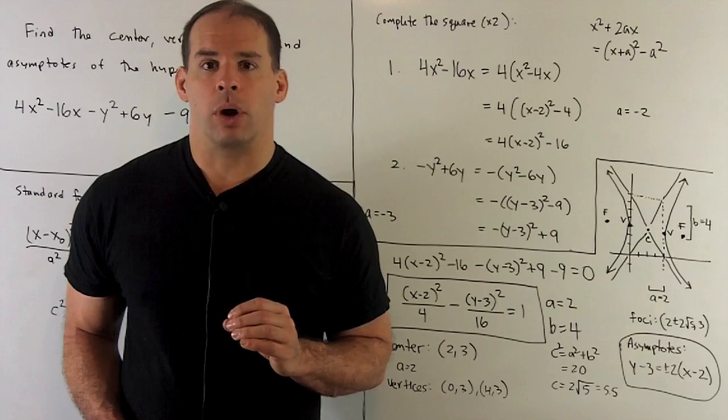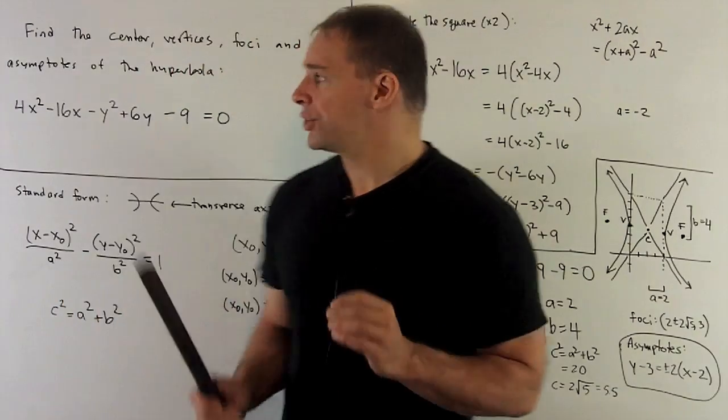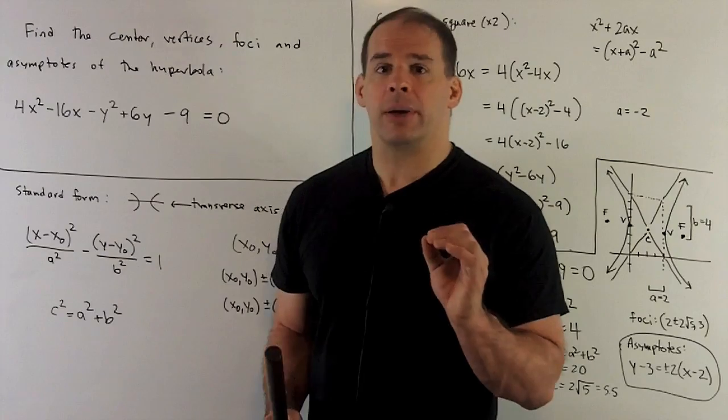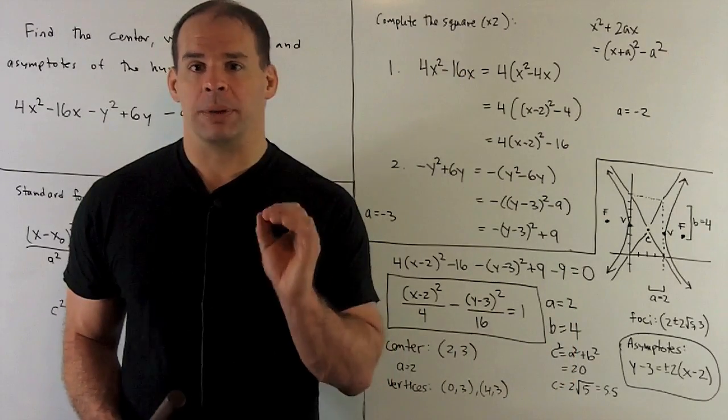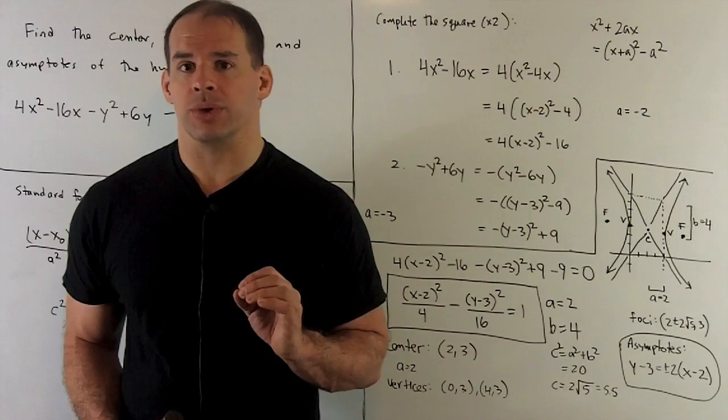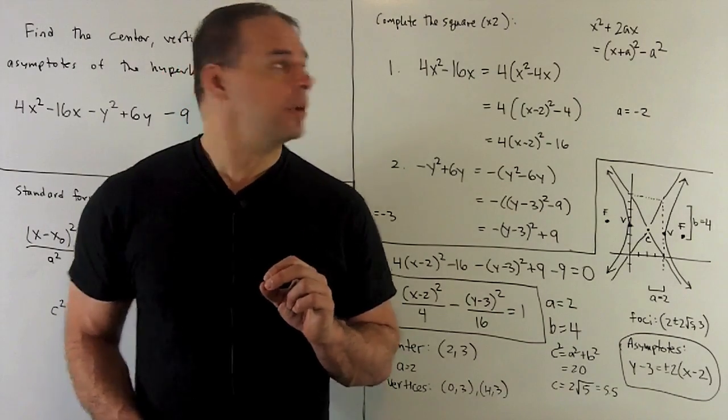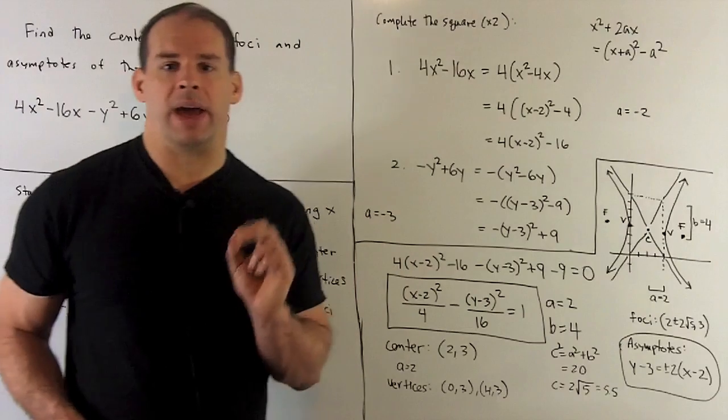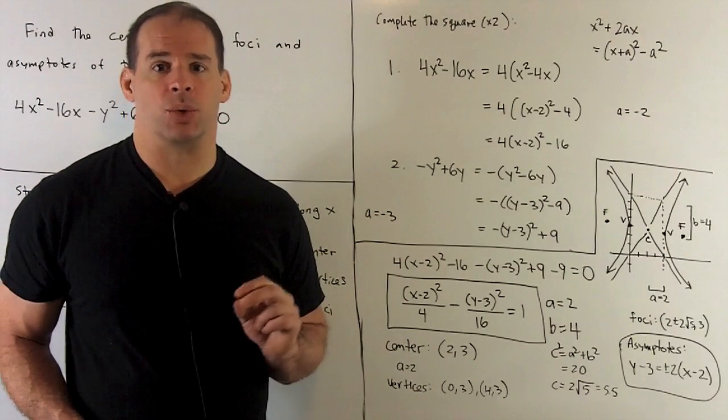To put our equation in the standard form, I'm going to complete the square twice. First, we'll put all the x terms together. We'll put all the y terms together. And then we'll apply our completing the square formula to each of those. Completing the square formula is x² + 2ax = (x + a)² - a².